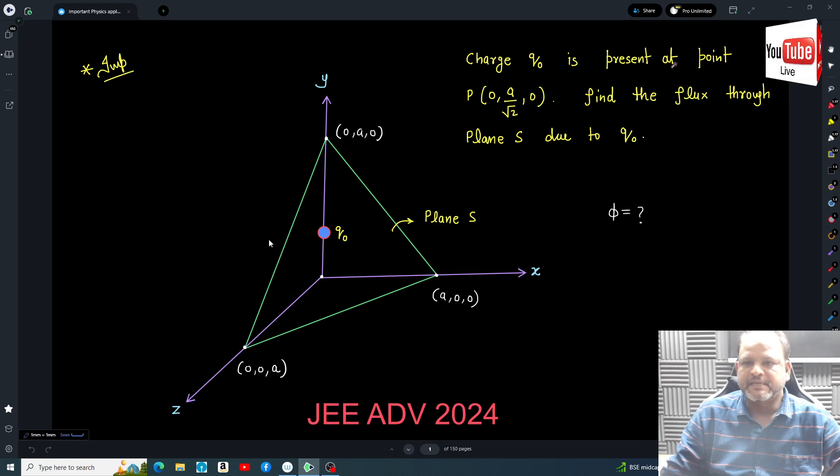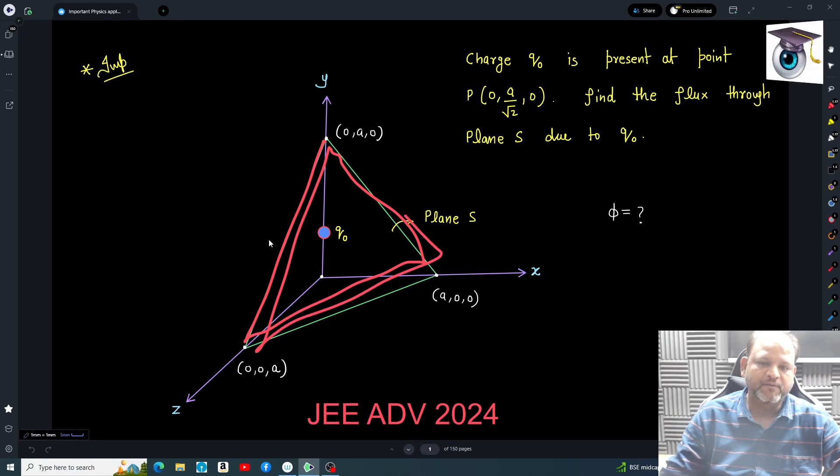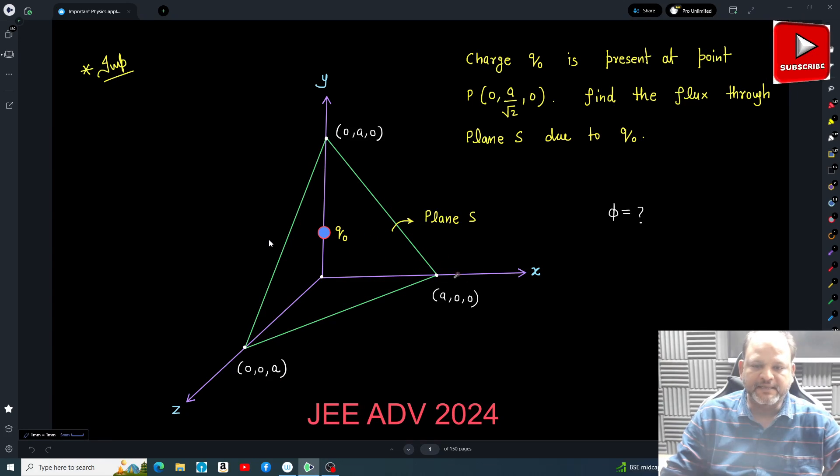A charge q₀ is present at point (0, a/√2, 0). Find the flux through plane S due to q₀. This plane is equally inclined because the distances - you can see the coordinates here (a,0,0), (0,a,0), (0,0,a). So basically this length is √2a, this length is √2a, this length is √2a.